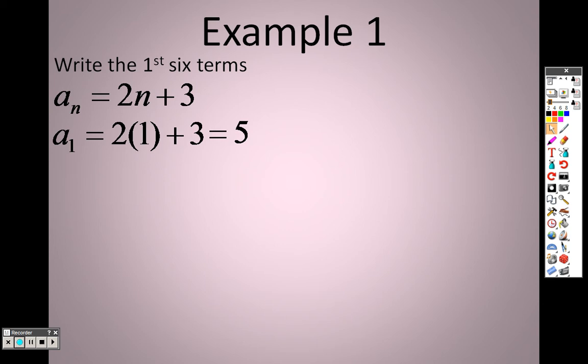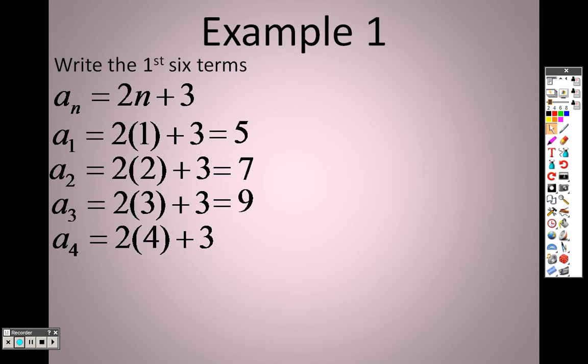To find the second term, I would plug in a 2, so 2 times 2 is 4, 4 plus 3 is 7. For the third term, I'd plug in a 3, so 2 times 3 is 6, and 6 plus 3 is 9. For the fourth term, I'll plug in a 4, so 2 times 4 is 8, 8 plus 3 is 11.